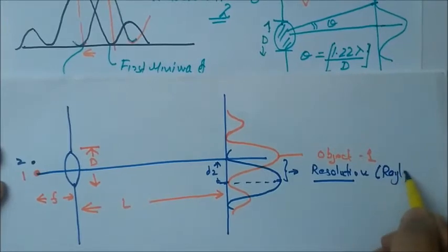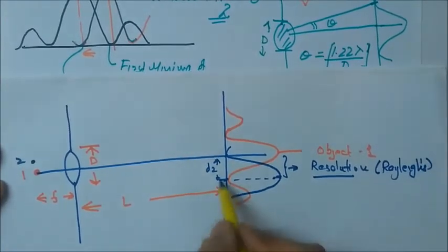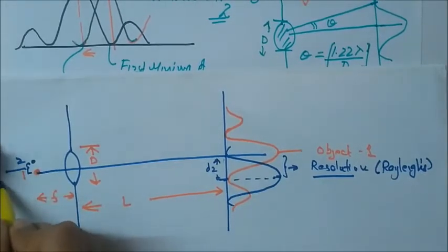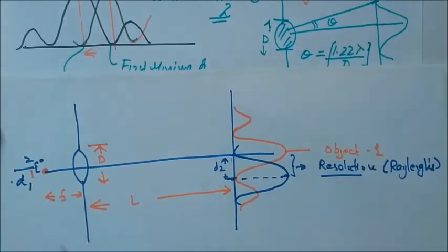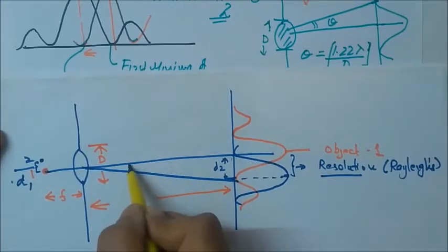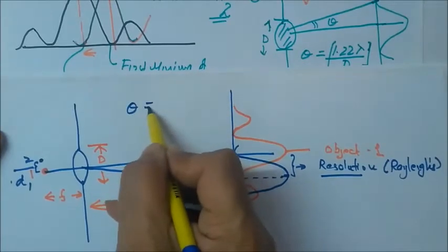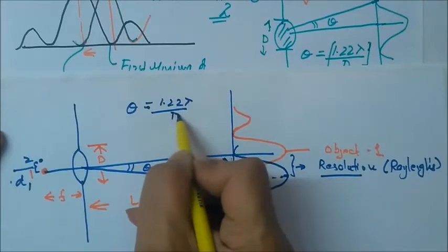Let the object's distance be D1. Now we know that this angle, first minima, the angle theta which it will make is theta equals 1.22 lambda upon D, where D is this aperture diameter.